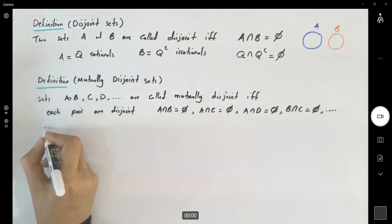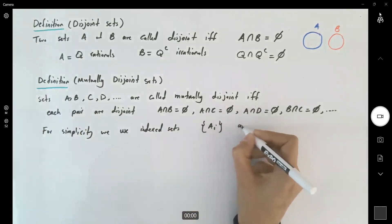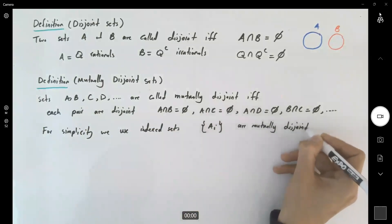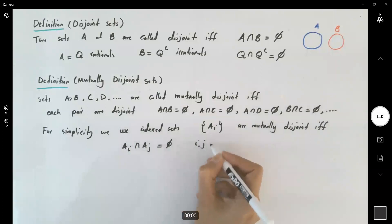For simplicity, we use indexed sets. The collection of sets A sub I's are mutually disjoint if and only if A sub I intersection A sub J is empty, where I and J belong to natural numbers. When you're talking about indexed sets, you're going to start from one and go to larger numbers.